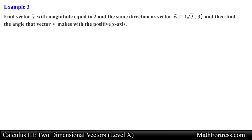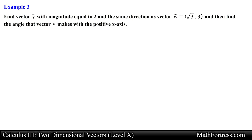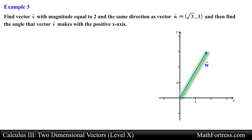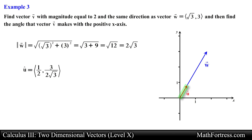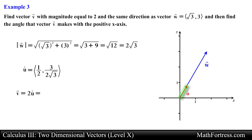Next example: find vector V with magnitude equal to 2 and the same direction as vector W, then find the angle that vector V makes with the positive x-axis. We first find a unit vector in the direction of W. Using the Pythagorean theorem, the magnitude of vector W simplifies to 2 root 3. We divide each component of W by this magnitude to get the unit vector, then scale it by a factor of 2 to obtain vector V, which has the same direction as W but magnitude 2.